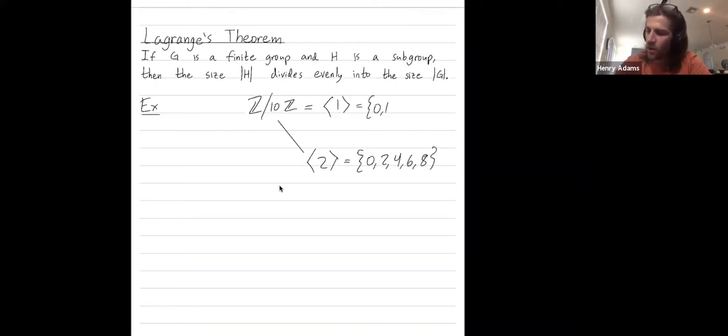The entire group has all numbers up to 9. Another subgroup sitting inside of here is the subgroup generated by 5, which has just two elements, 5 and 0. And then the last subgroup is the subgroup consisting of only the identity, 0. So that's just the subgroup generated by 0.